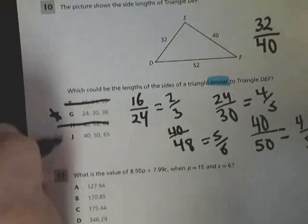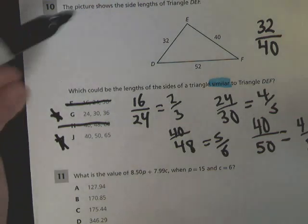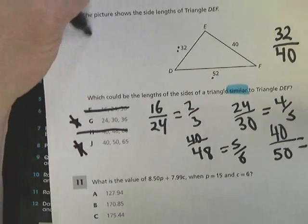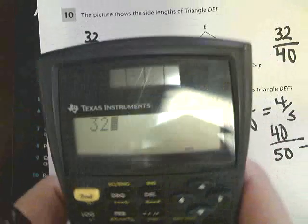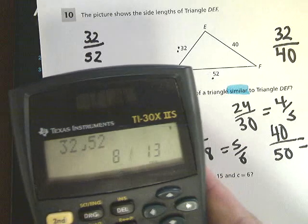Now I'm going to pick two other sides and make a comparison. I'm going to pick the smallest one and the largest one, so 32 over 52. I get 8 over 13.